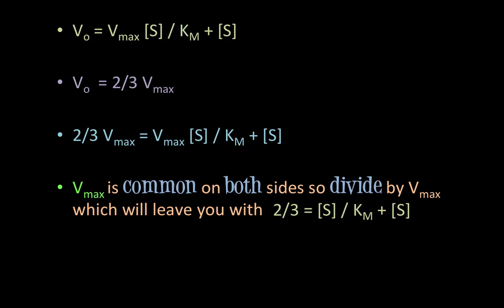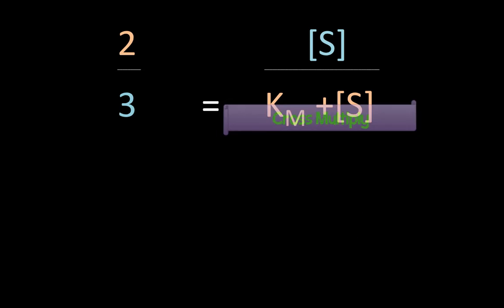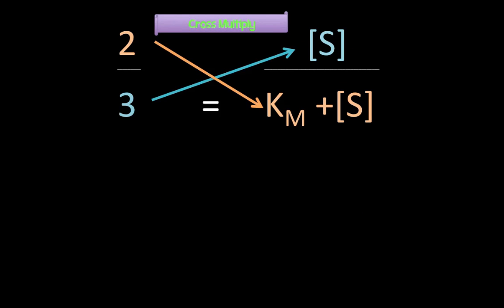So let's blow this up on the next slide and let me see what we can do with this even further. So you should have something like this. So two-thirds is equal to substrate concentration divided by KM plus substrate concentration. Now if you just want to get a linear relationship, all you've got to do is cross-multiply.